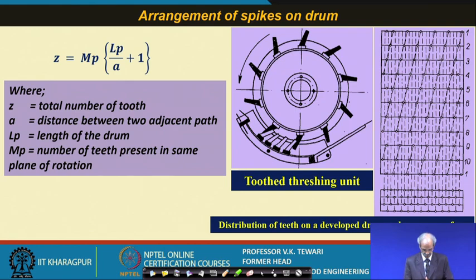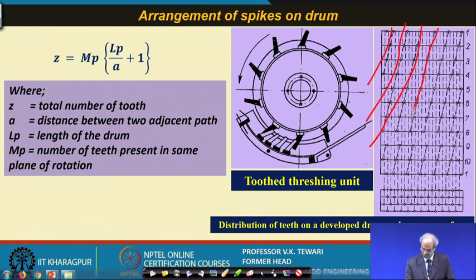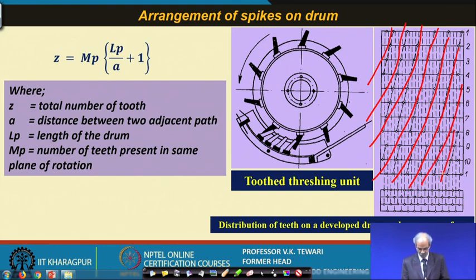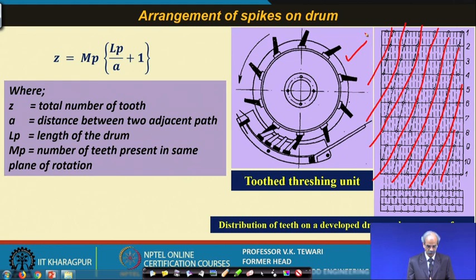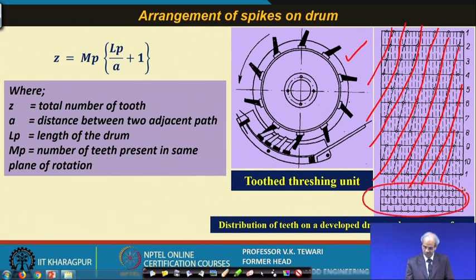Regarding the arrangement of spikes on the drum — it is worth understanding how they are designed. They are arranged in a spiral fashion: you can see they go from one end to the other in this spiral pattern in the toothed threshing unit. The distribution of teeth on the developed drum and concave surface is shown here, and this is the design in which they are connected.